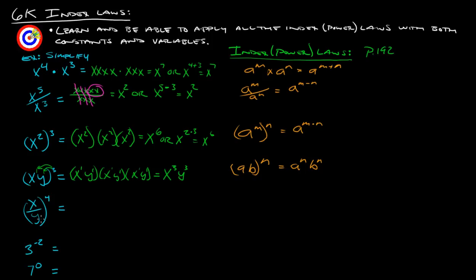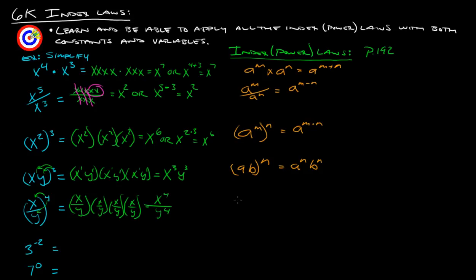The fifth law: (x/y) to the 4th. We can rewrite this as x/y times x/y times x/y times x/y, giving 4 x's on top and 4 y's on the bottom, so x to the 4th over y to the 4th. You just take that 4 and distribute it to both the top and the bottom. The general form: (a/b) to the nth power equals a to the nth over b to the nth.